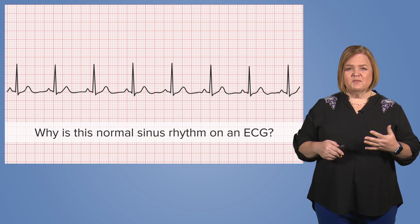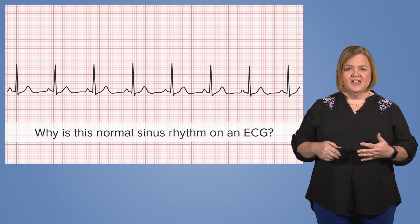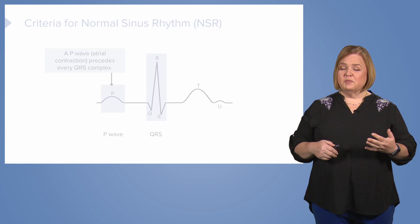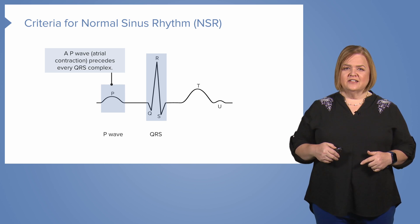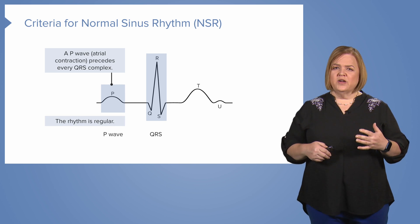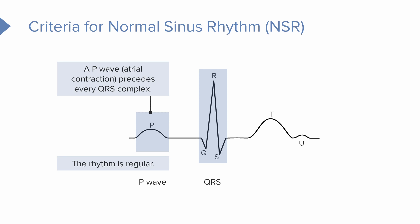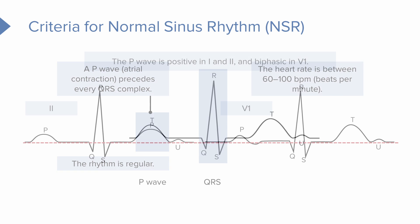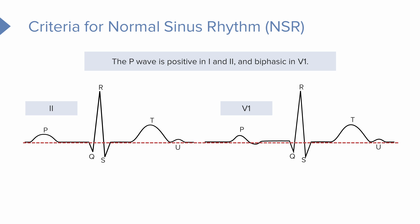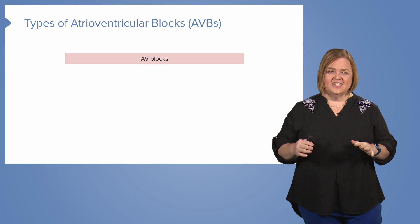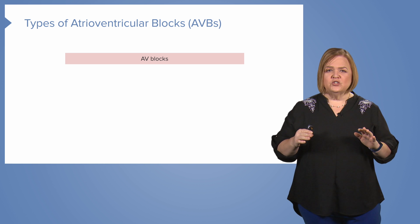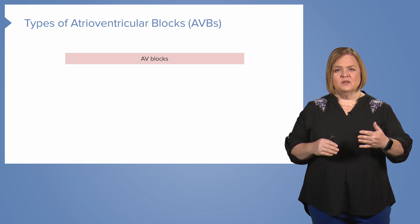So we've discussed why this ECG is normal sinus rhythm. P waves: one for every QRS. The rhythm is regular — it can vary slightly during respirations, but for the most part it will be very regular. The rate ranges between 60 and 100. The P wave is positive in lead 1 and lead 2, and biphasic in lead V1. Now let's dig into the atrioventricular blocks — the AV blocks.